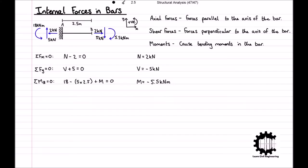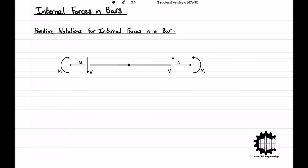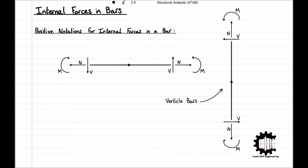Having computed the internal forces at point B in the bar, we can see that if equilibrium is guaranteed for one side of the structure, equilibrium will also be guaranteed for the other side of the structure, considering forces of equal intensity but opposite sense. Therefore, we can write out the positive notations for internal forces in a bar. For structural analysis, considering a bar oriented from left to right, the positive axial force acts outwards from the centre of the bar subjecting it to tension, the positive shear force acts downwards on the left and upwards on the right, and the positive moment acts clockwise on the left and anti-clockwise on the right. Bars are typically oriented from left to right, except for vertical bars which are oriented upwards, meaning the bottom is the left and the top is the right.